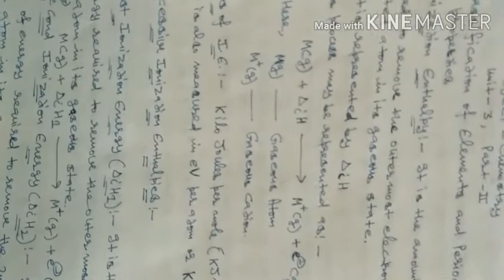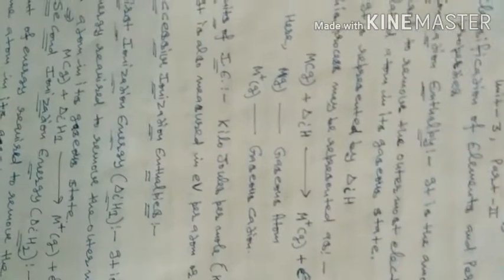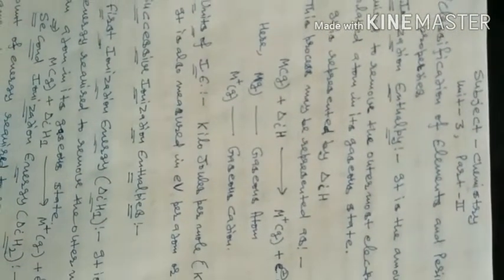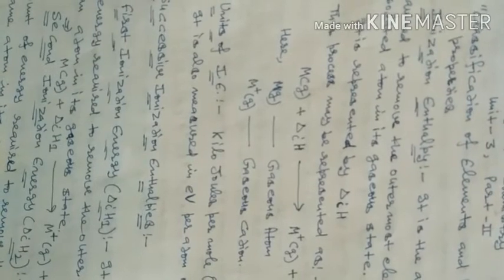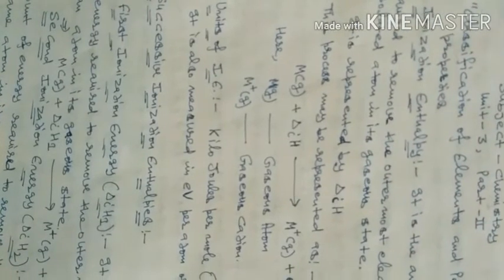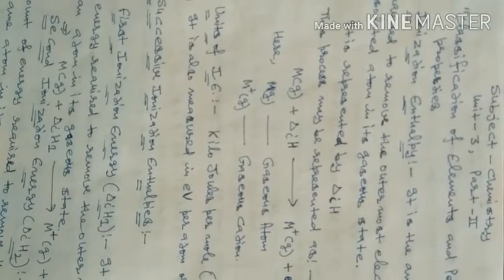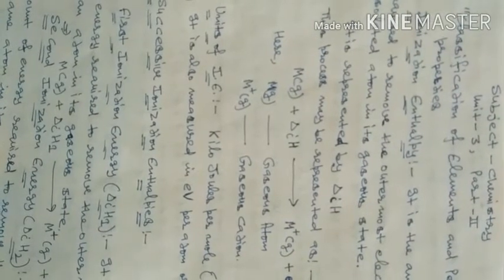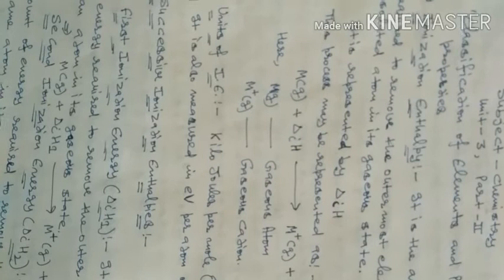Good morning students. In the last lecture we discussed our first periodic property, which is atomic radii. In this video lecture we will discuss our remaining periodic properties: ionization enthalpy, electron gain enthalpy, electronegativity, and valency. So let's start.